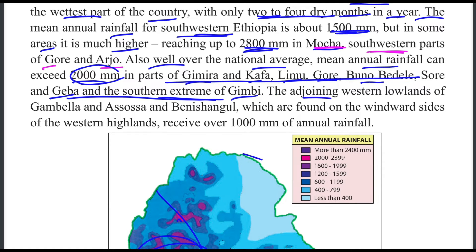The Western Lowlands of Gambela, Assosa and Benshangul, which are found in the windward sites of the Western Highlands, receive over one thousand mm.